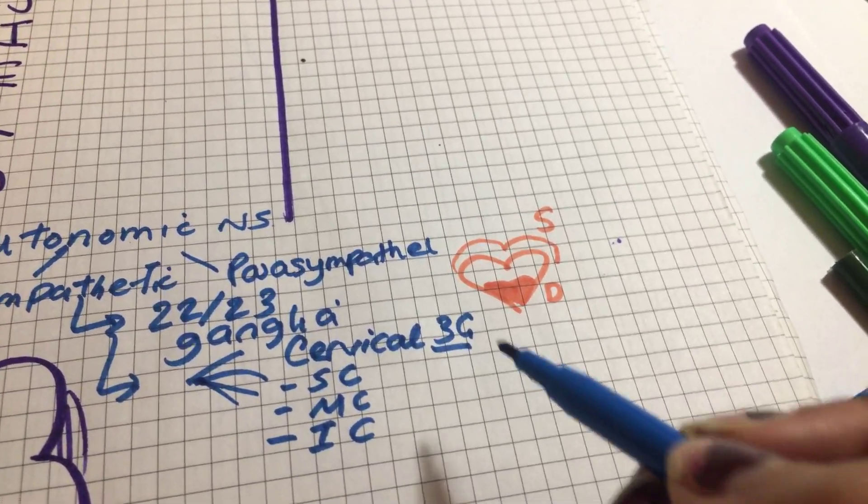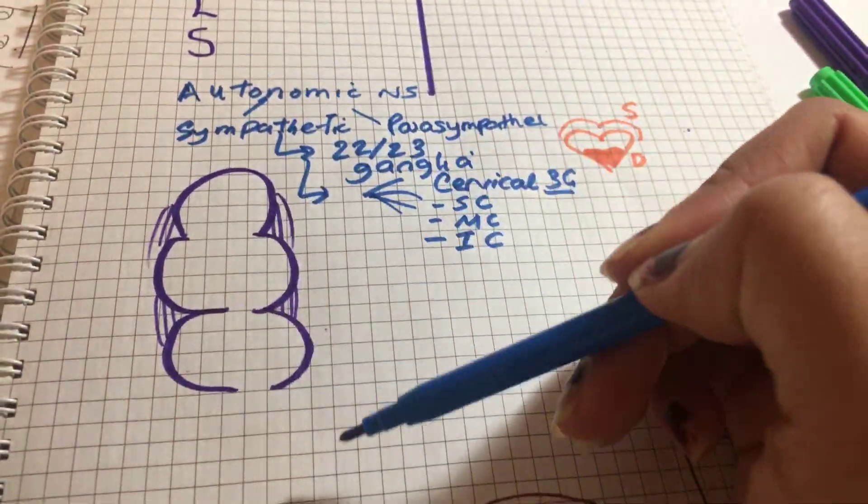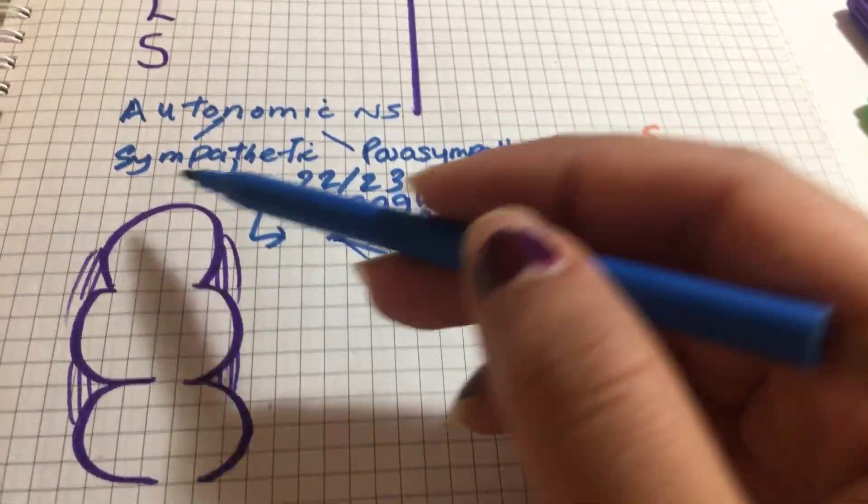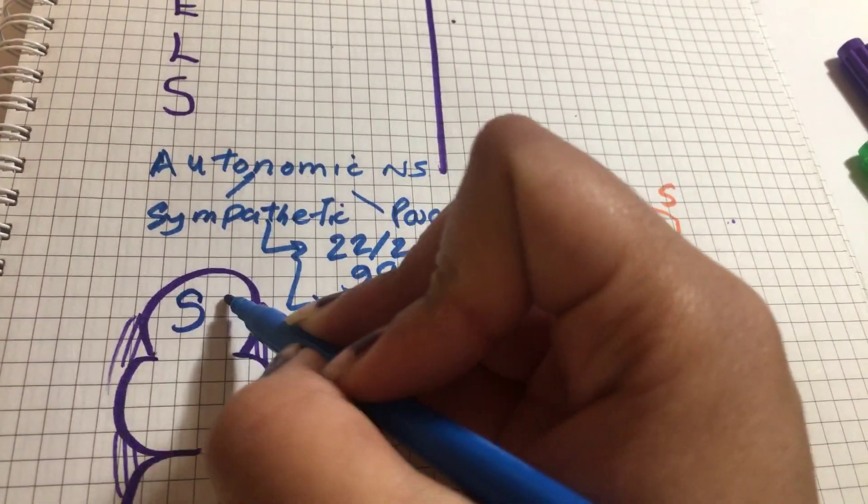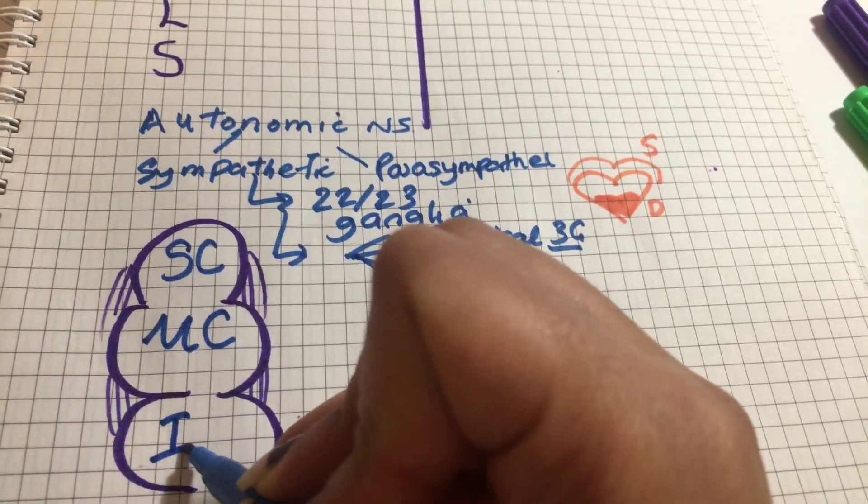In terms of what they give off and where they're located, this is the superior cervical ganglion, this is your middle cervical ganglion, this is your inferior cervical ganglion.